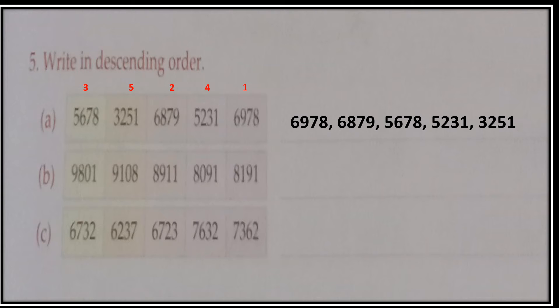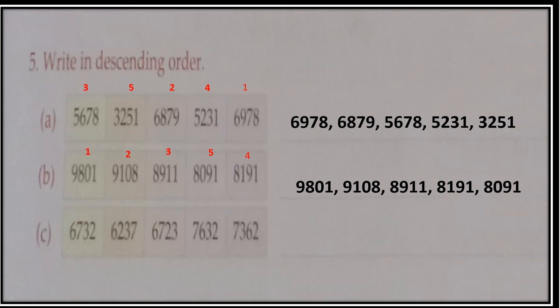Now compare the numbers having 8 at the thousands place. Compare their hundreds place: one has 9, one has 1, and one has 0. The greatest is 9, so 8911 comes first. Then compare the remaining two: 1 is greater than 0, so 8191 comes next, then 8091. So the descending order for Part B is: 9801, 9108, 8911, 8191, 8091.